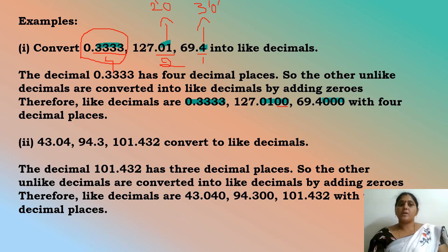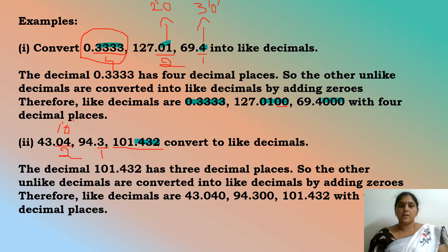One more example: convert 43.04, 94.3, and 101.432 into like decimals. The largest number of decimal places is three, from 101.432. The first number has two decimal places, so add one zero to get 43.040. The second has one decimal place, so add two zeros to get 94.300. Our like decimals are now 43.040, 94.300, and 101.432, all with three decimal places.